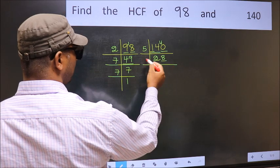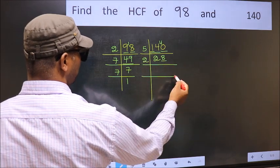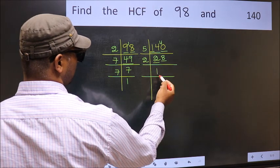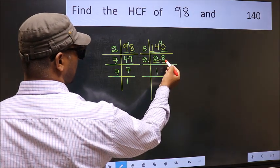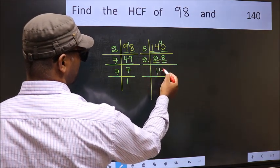Now last digit 8, even, so take 2. First number 2. When do we get 2 in 2 table? 2 1s, 2. The other number 8. When do we get 8 in 2 table? 2 4s, 8.